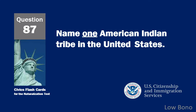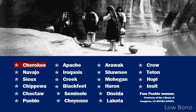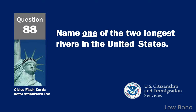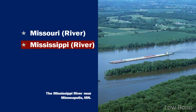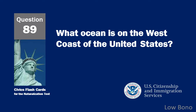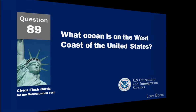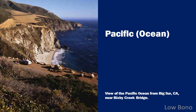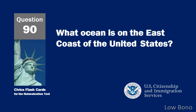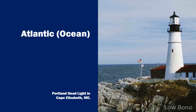Name one American Indian tribe in the United States. Cherokee. Name one of the two longest rivers in the United States. Mississippi River. What ocean is on the west coast of the United States? Pacific Ocean. What ocean is on the east coast of the United States? Atlantic Ocean.